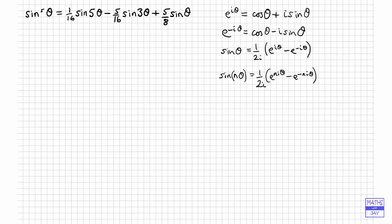It's also useful to note down that i is the square root of negative 1. So if we square that, we get negative 1. And if we square that again, so we're going to get i to the fourth — it's negative 1 times negative 1 — so that's going to be 1. So that will come in useful later on as well.